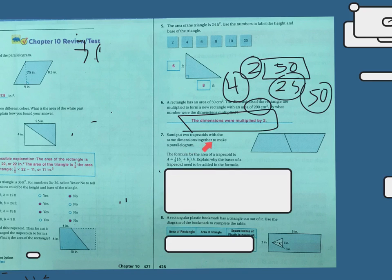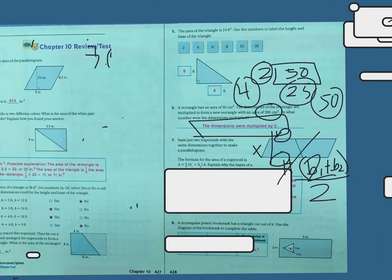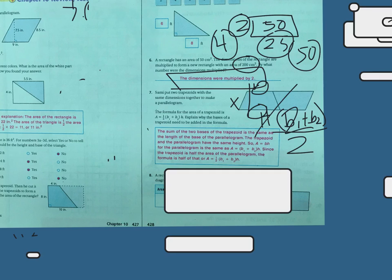Sammy put two trapezoids with the same dimensions together to make parallelograms. The formula for the area of the trapezoid is area equals half times base 1 plus base 2 times height. Or I like to write it this way because I think that half confuses all of you: base 1 plus base 2 times the height, and then you're going to divide that whole thing by 2. So at first I add my two bases, then I multiply the height, and then I divide that number by 2. So they're trying to say that the sum of the two bases is the same as the length of the parallelogram. So the trapezoid and the parallelogram must have the same height.